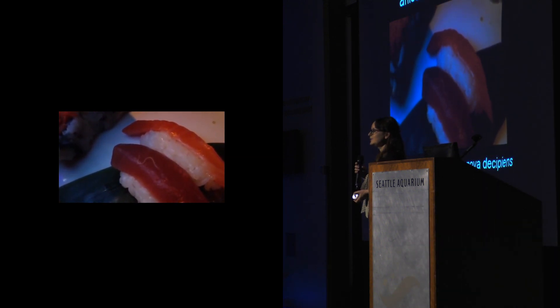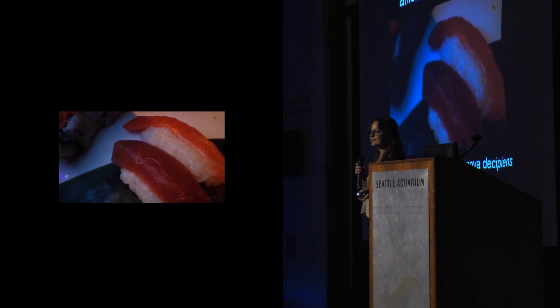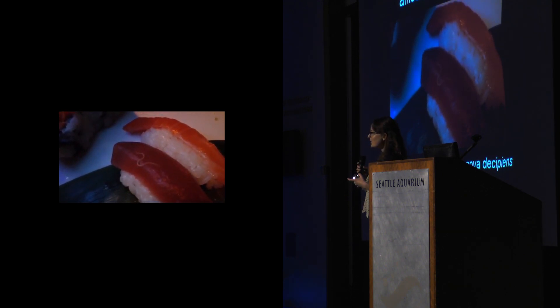Here's one. This is an Anisakid nematode. In North America, we deal with two species: Anisakus simplex and Pseudoterranova decipiens. You might find this revolting — I don't think you're alone. But I want to make an argument for these parasites being amazing animals. And when you eat these parasites, you get to be part of a natural cycle — a natural cycle that links plankton to fish.